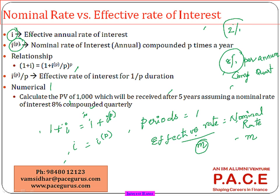If someone gives eight percent per annum effective, it is not two percent per quarter. You have to understand the difference: eight percent per annum effective need not work out to two percent per quarter, but eight percent per annum nominal compounded quarterly will definitely work out to two percent per quarter.